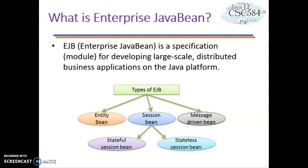There are three types of EJB: Entity Bean, Session Bean, and Message-Driven Bean. For Session Bean, there are two types: Stateful and Stateless.